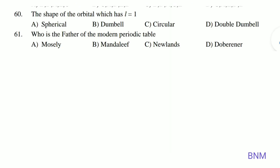The shape of the orbital which has l equals 1 is a P orbital. The P orbital has a dumbbell shape. Answer: B. Next, who is the father of the modern periodic table? He is the father of the modern periodic table.